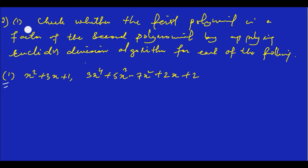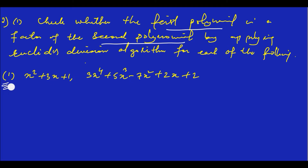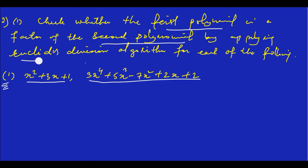The question is: check whether the first polynomial is a factor of the second polynomial by applying Euclid's division algorithm for each of the following. The factors are very important.